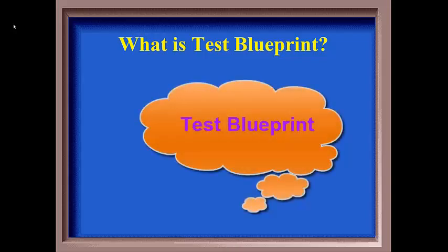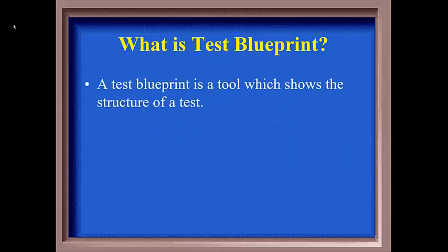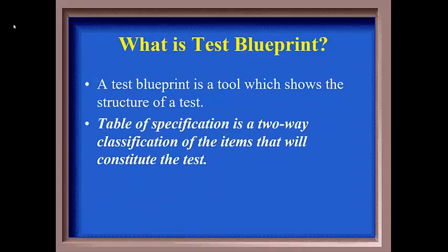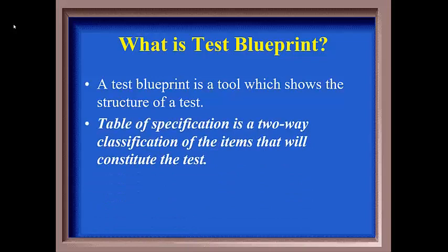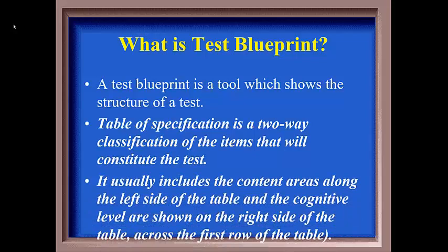In simple terms, it is a tool which shows the structure of a test. Table of specification or test blueprint is also defined as a two-way classification of the items that will constitute the test. It usually includes the content areas along the left side of the table and the cognitive level across the first row of the table.